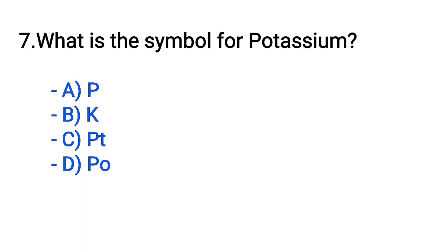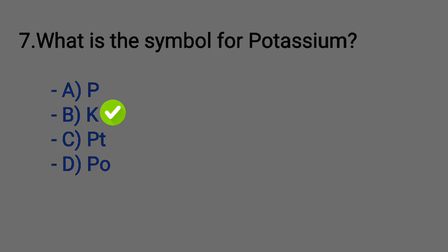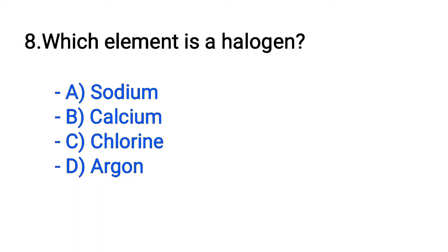Question number 7. What is the symbol for potassium? Option A: P. B: K. C: PT. D: PO. The correct answer is option B, K.